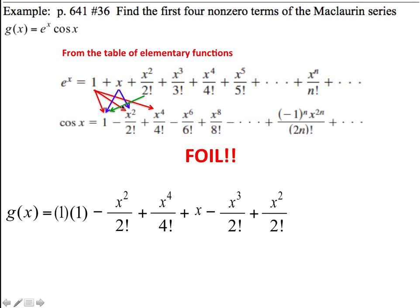I'm going to come back and start by multiplying that by 1 to get x squared over 2 factorial. Then I'm going to multiply these two terms to get a 4th degree term. So that's x to the 4th over 2 factorial times 2 factorial — which is not 4 factorial, it's just 2 times 2, so I left it as 2 factorial times 2 factorial. And then x cubed over 3 factorial times 1 is itself.